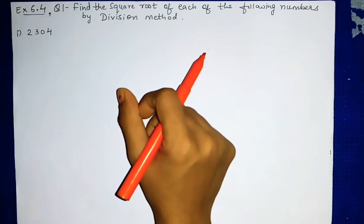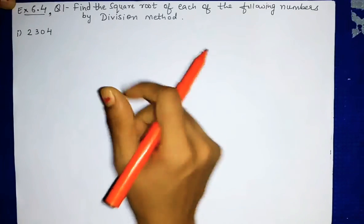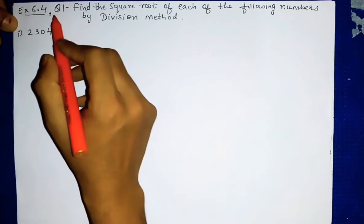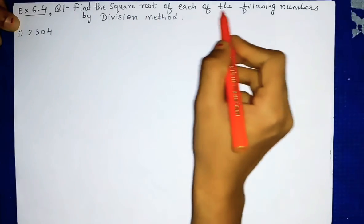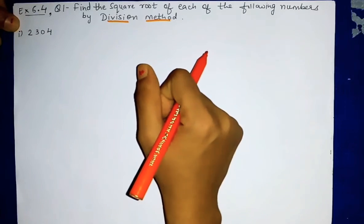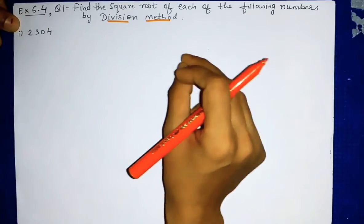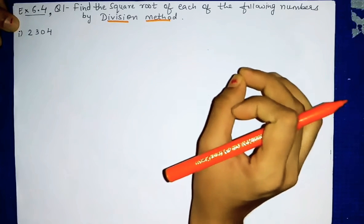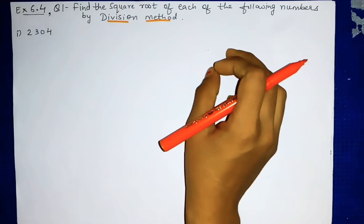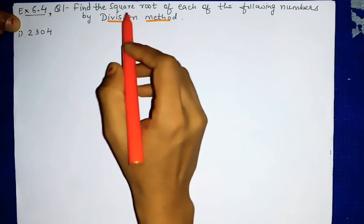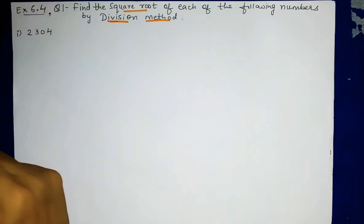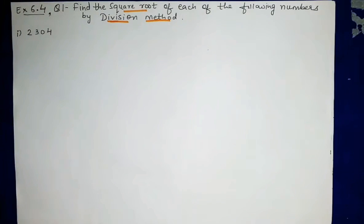Hello everyone. Moving ahead with the syllabus, we will see Exercise 6.4 of Chapter 6: Square and Square Root. Question number one is: find the square root of each of the following numbers by division method. In the previous video we saw how to find square root by prime factorization method. In this video we will see how to find square root by long division method.